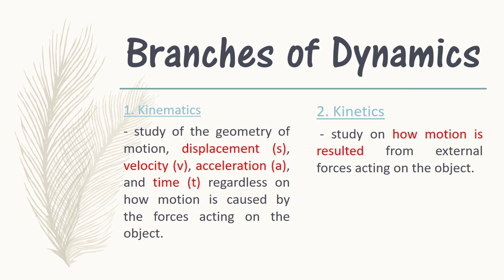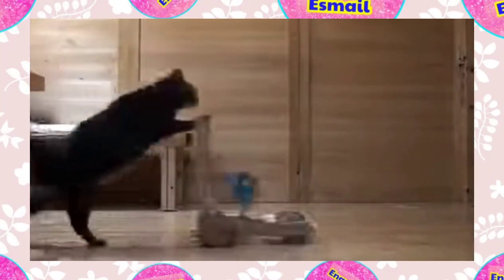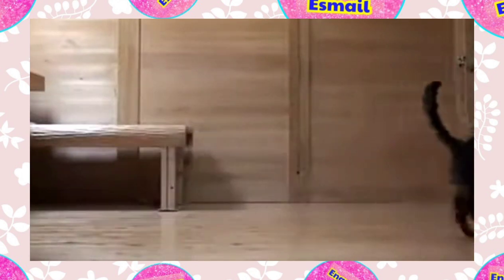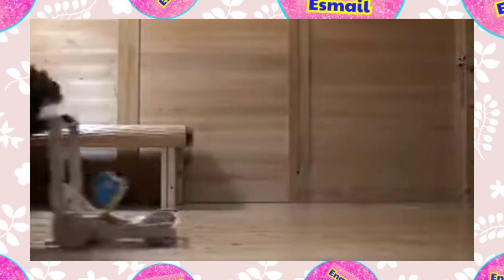While Kinetics is a study on how motion results from external forces acting on the object. The difference between these two branches of dynamics is that in Kinetics it is concerned with the forces acting on the object which makes it move, while in Kinematics it is concerned only with the motion of the object but not with the forces that act upon it.